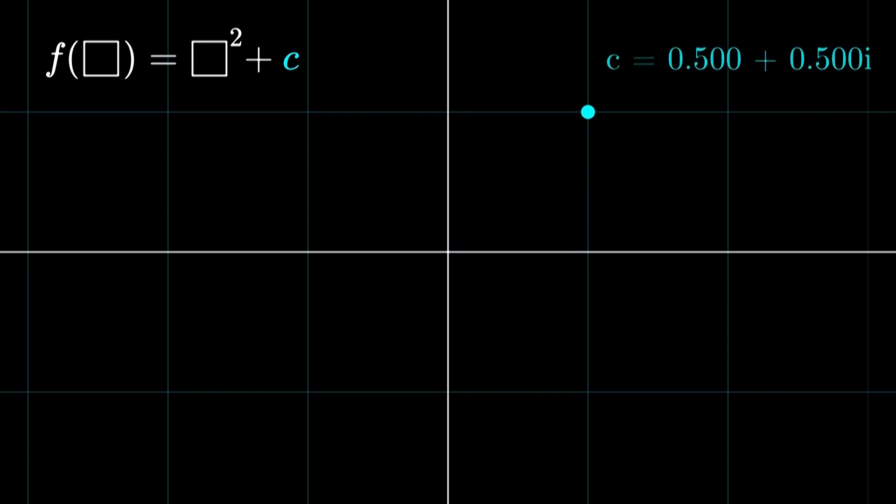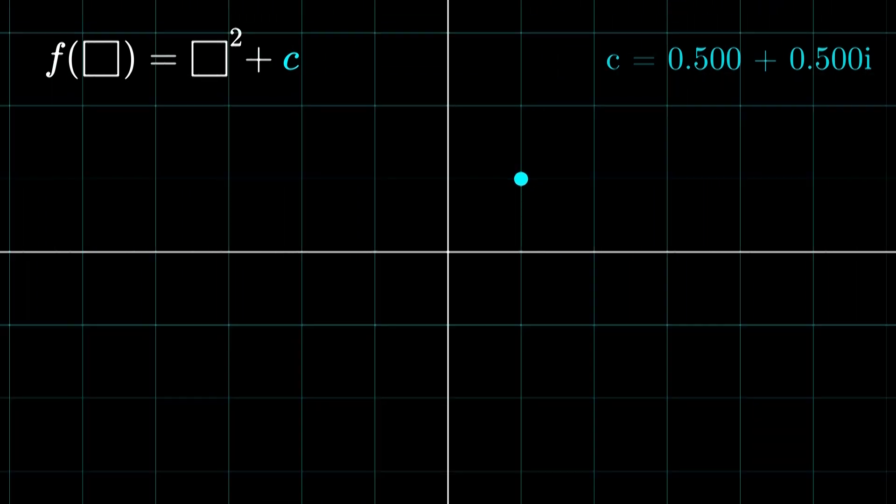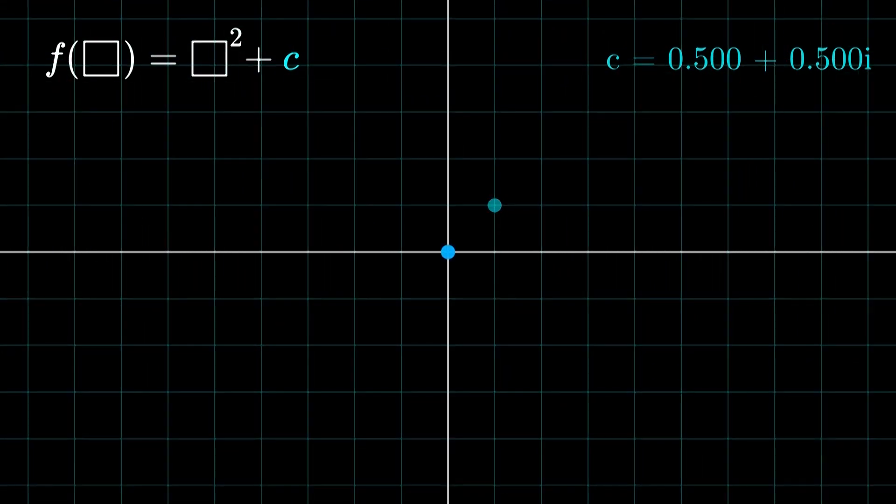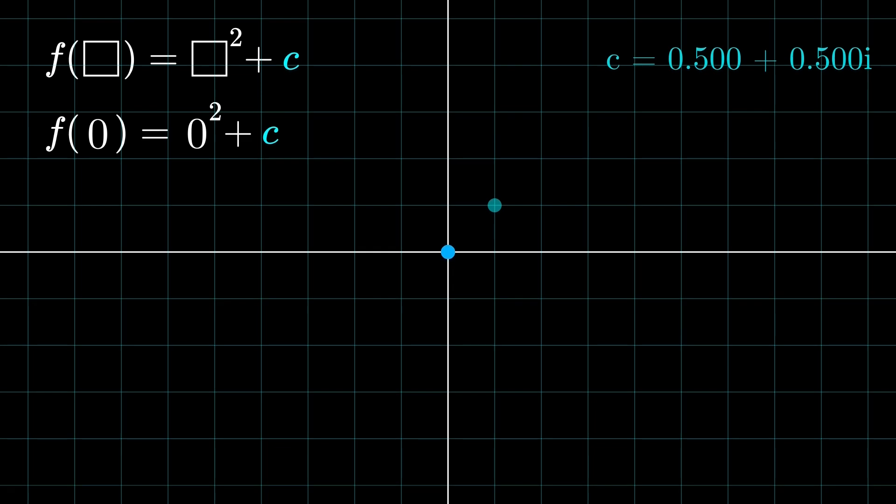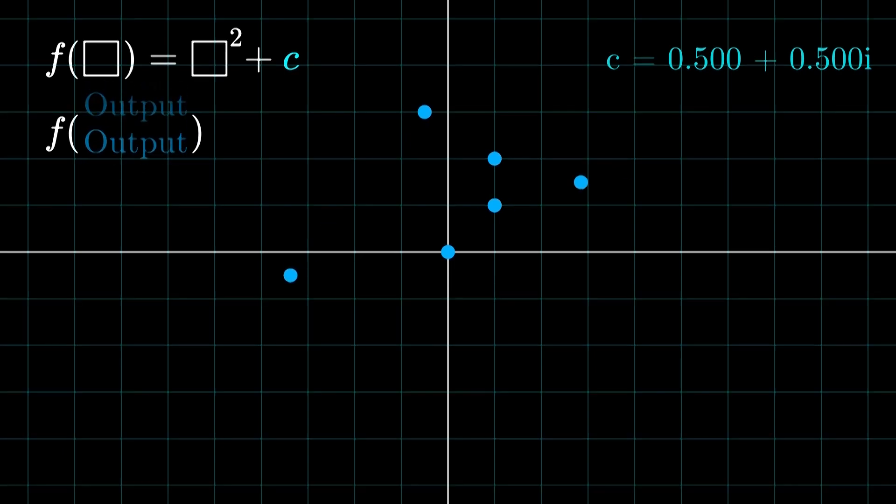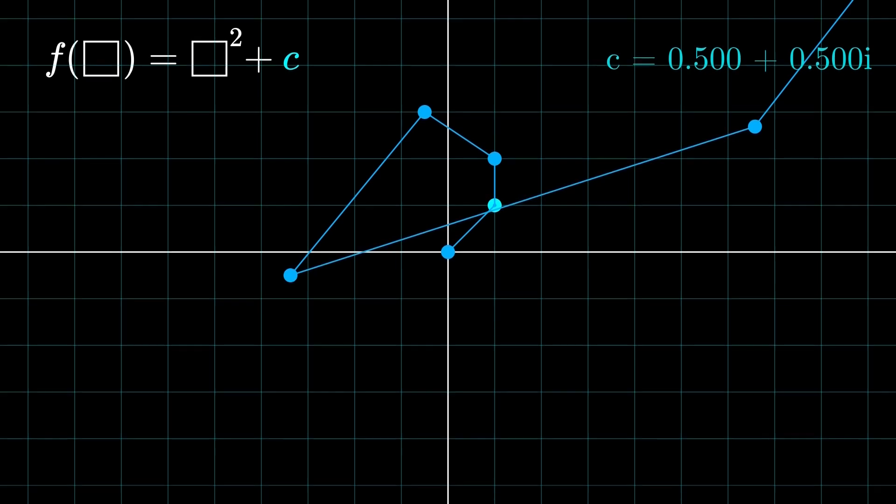So initially we choose any number from the complex plane as c. So let's select the value of c as 0.5 plus 0.5 times i. And then what we do is we apply this function to 0. Applying this function to 0 means that we plug in 0 as the input, so obviously this gives us an output which is equal to c itself. So now we apply this function again, but this time we take c as the input which gives us a new output. So what we do now is we keep on applying this function to our outputs repeatedly till infinity, and of course we join the points that we get as our outputs to get this kind of structure. So because we chose c as 0.5 plus 0.5 times i, we got this particular structure.